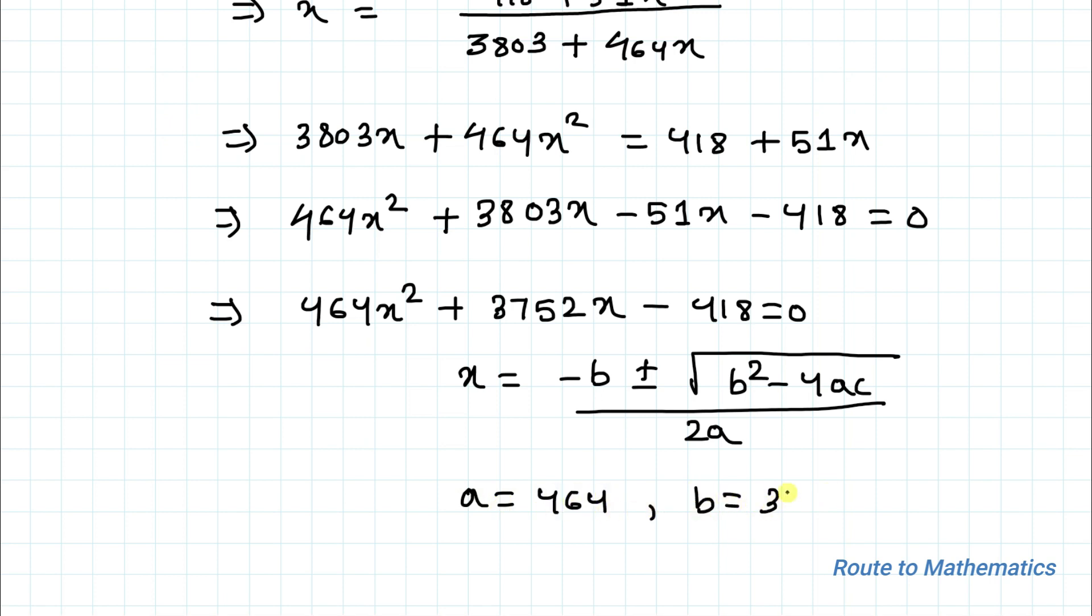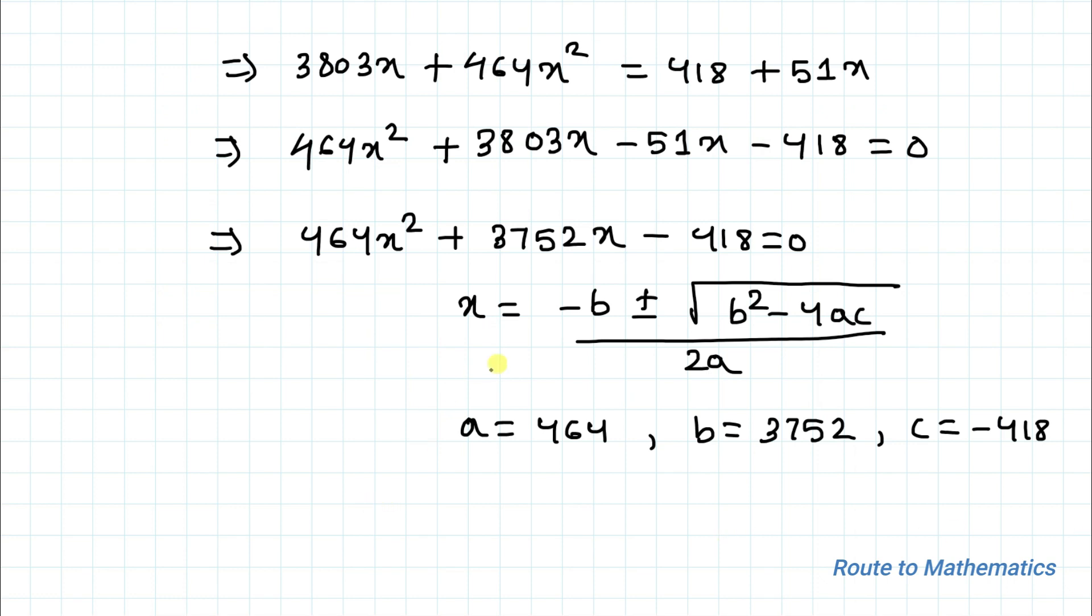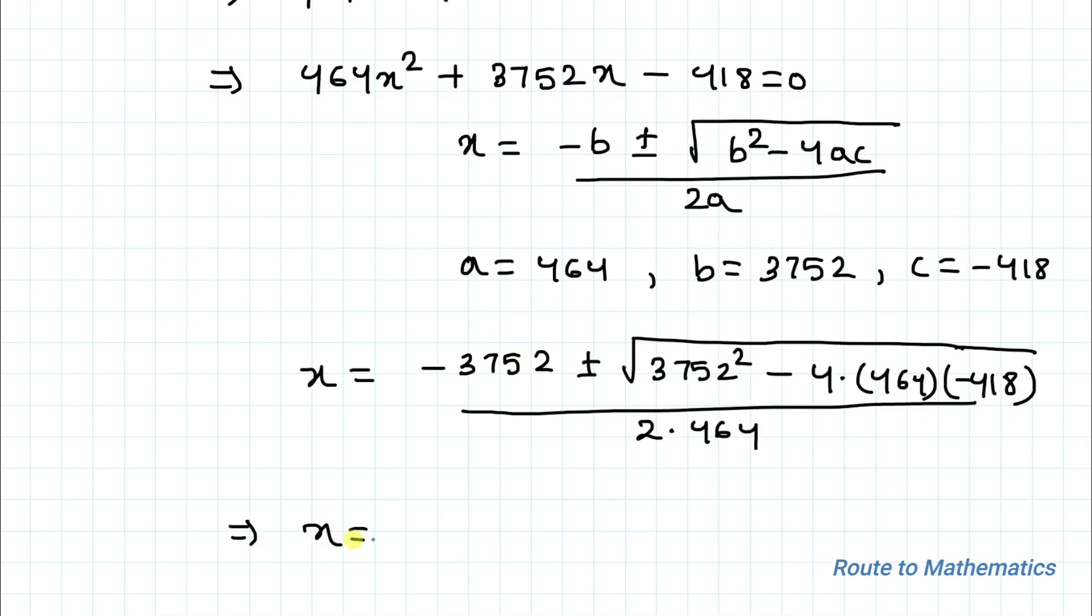Let's just put the value: x equals to minus 3752 plus or minus root over 3752 square minus 4 multiplied with 464 multiplied with minus 418, divided by 2 multiplied with 464. This implies x equals to, by writing this value in simplest form, we have minus 469 plus or minus 3 multiplied with root under 25787 divided by 116.